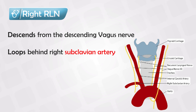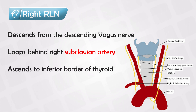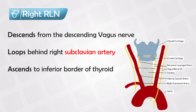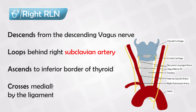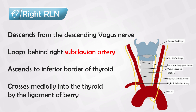The recurrent laryngeal nerve loops behind the right subclavian artery and then it recurs or ascends to the border of the inferior thyroid artery — this is a common injury site. If you're ever going to do a thyroidectomy, you have to ligate the inferior thyroid artery and you could also ligate the recurrent laryngeal nerve here. Finally, it crosses medially into the thyroid by the ligament of Berry, which is again another site of injury.